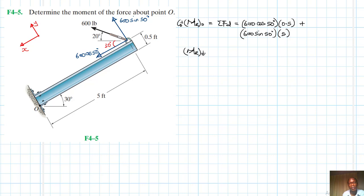Therefore, the resultant moment about point O is just equal to 600 cos 15 times 0.5 plus 600 sin 15 times 5. This gives us 2490.97 pounds feet.